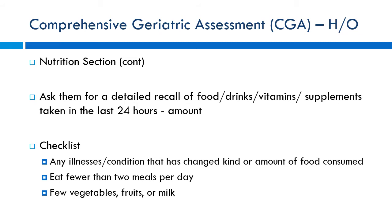Grapefruit juice is a potent CYP3A4 inhibitor that can affect drug levels. On one of my first rotations at a warfarin clinic in rural Florida, many patients grew their own vegetables and ate lots of collard greens, kale, and spinach. That has a huge effect on vitamin K intake, which significantly affects warfarin. You have to ask: what leafy green vegetables are you eating, how much, and is it consistent or erratic?